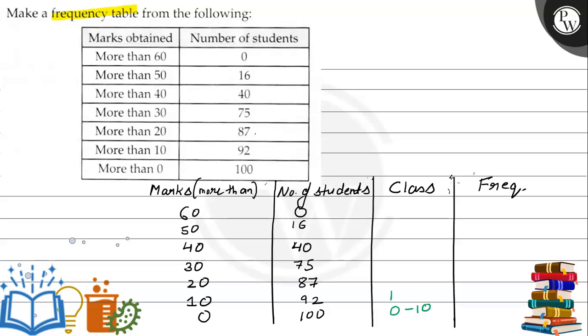0 to 10, 10 to 20, 20 to 30, 30 to 40, 40 to 50, 50 to 60, and 60 plus.